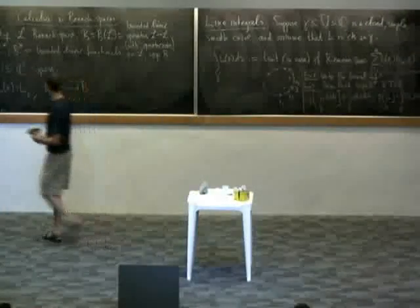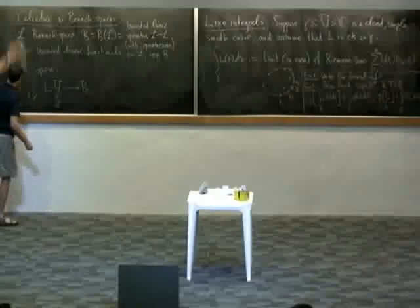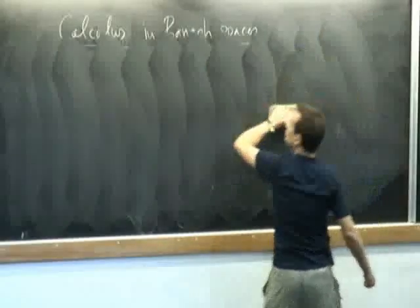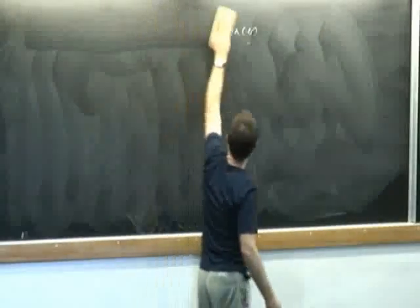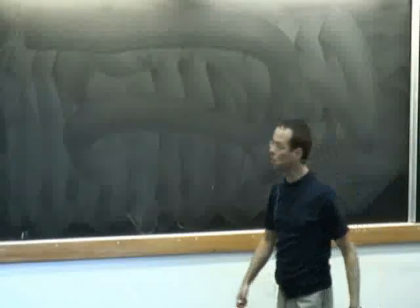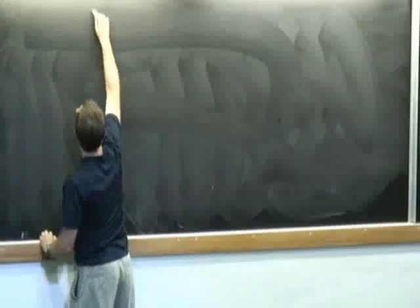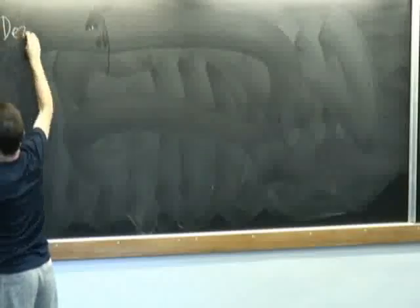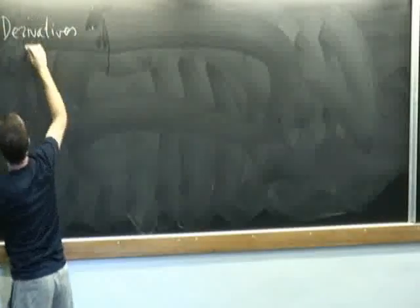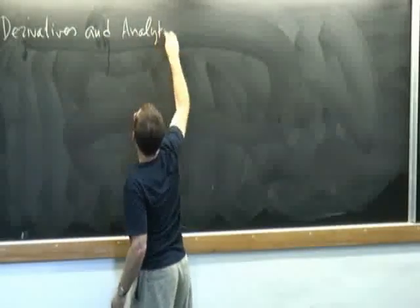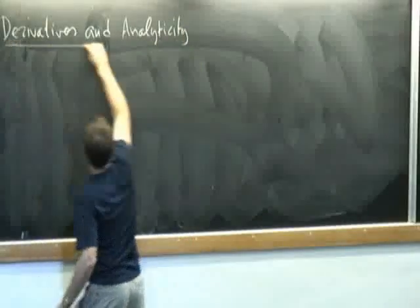Now let's talk about derivatives — that's where the miracles start to happen. There are two ways to define differentiability for objects taking values in a Banach space. I'll start with the one which is most natural.